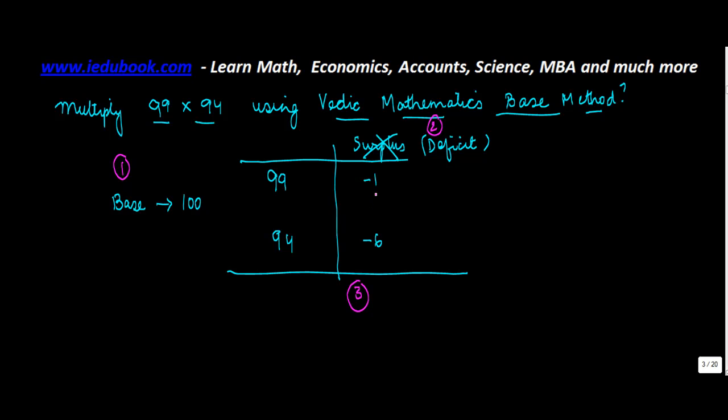Similarly, I'll multiply the deficits. So minus 6 into minus 1 will give me 6. Minus into minus gives me plus. Similarly, what do I do? Step 4: I add one of these numbers and the surplus of the other.